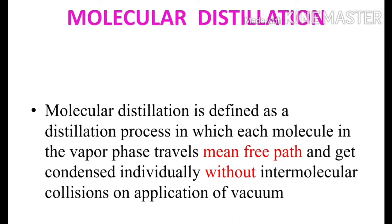By applying vacuum, we can increase the intermolecular distance between each molecule which is present in the vapour phase, so the chances of collision decrease. These molecules can travel their mean free path and enter the condenser without collision. From the condenser, these molecules undergo condensation and individually condense, and we can collect the distillate into a receiver. This is simply molecular distillation.